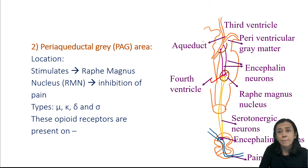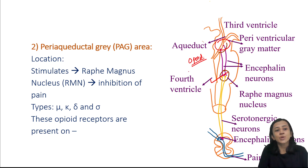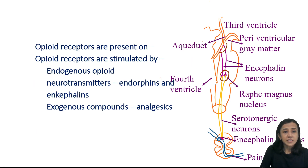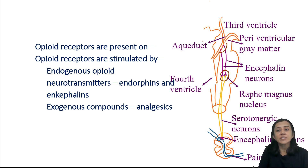The periaqueductal gray area, located in the midbrain, sends neurons to the raphe magnus nucleus and causes inhibition of pain. Neurons of the periaqueductal gray matter have opioid receptors on their surface — types mu, kappa, and delta. These opioid receptors are also present on the terminals of primary afferent fibers carrying pain sensation and on the terminals of the substantia gelatinosa of the dorsal horn. These opioid receptors are stimulated by endorphins and enkephalins.